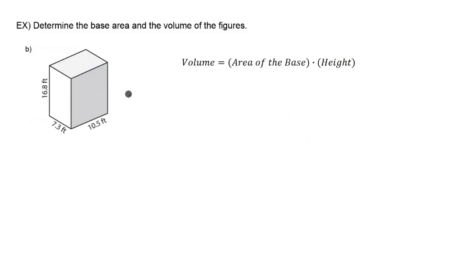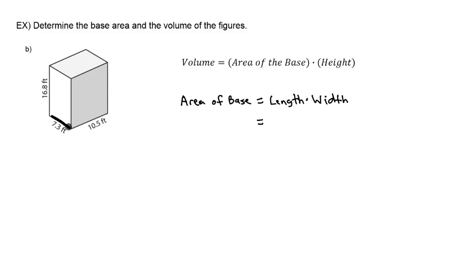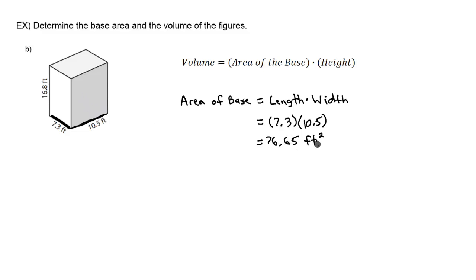Part B is very similar to part A — it's still a rectangular prism but with different dimensions. The base is still a rectangle, so area equals length times width. It doesn't really matter which side is length and which is width, so we have 7.3 times 10.5, which gives us 76.65 feet squared.